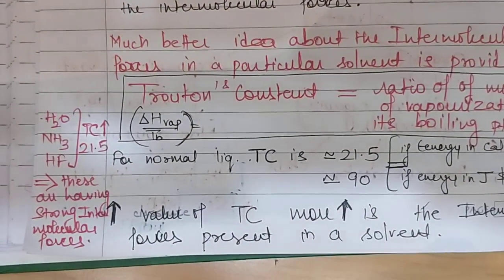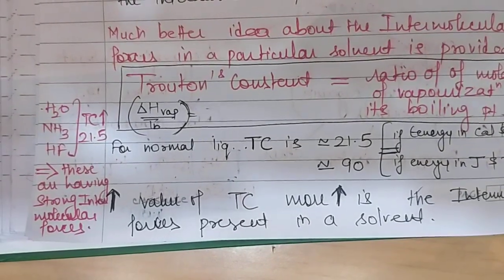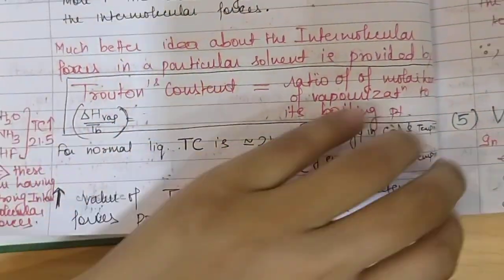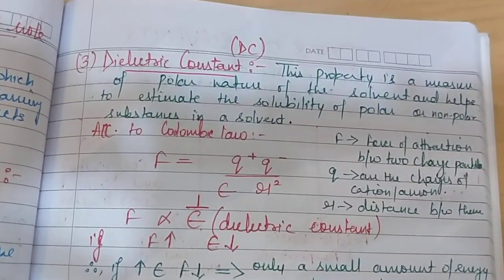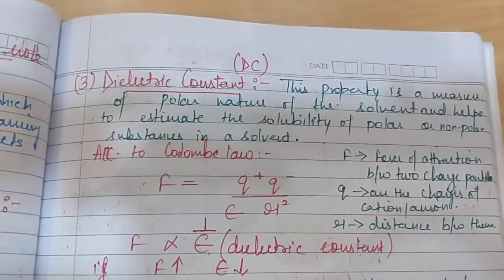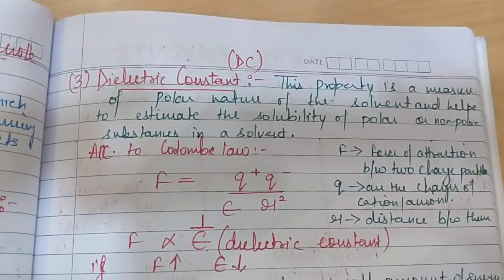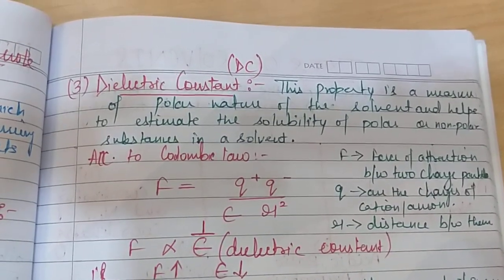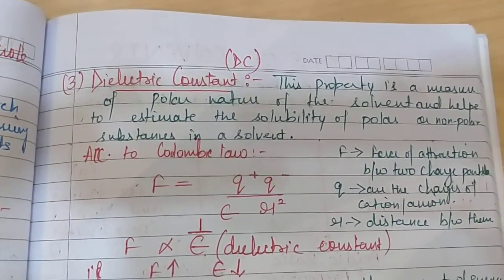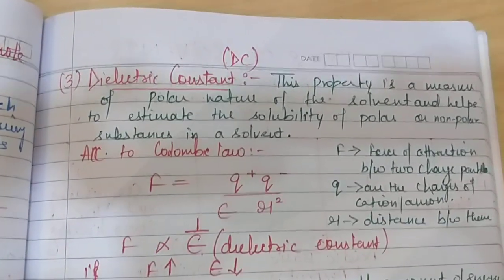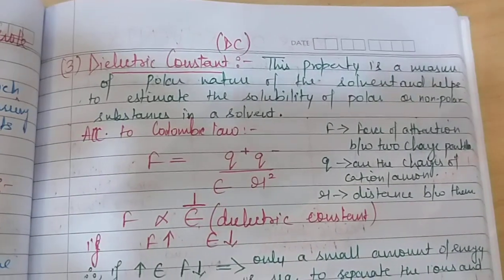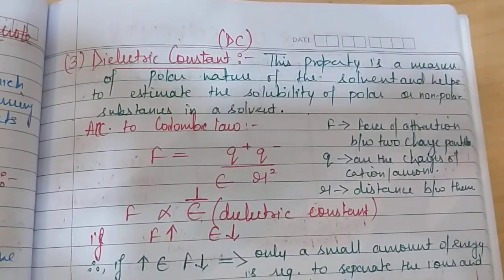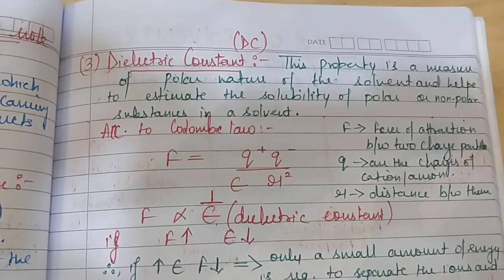The next property is dielectric constant. As already discussed, dielectric constant is a measure of the polar nature of the solvent and helps estimate the solubility of polar or non-polar substances in a solvent. When a solute is added to a solvent, what a high-dielectric-constant solvent does is weaken the force of interaction between the cationic and anionic parts of the solute.